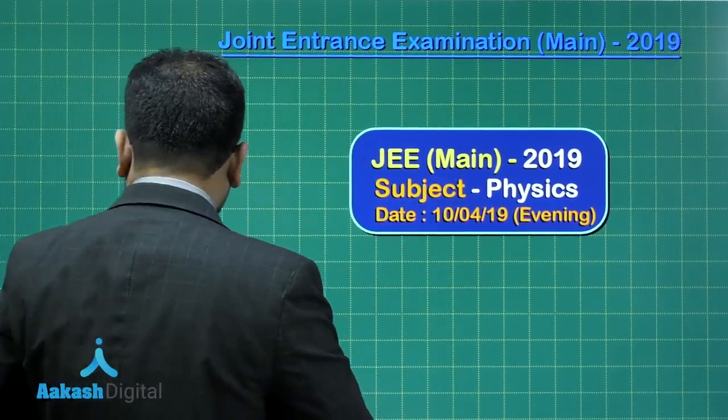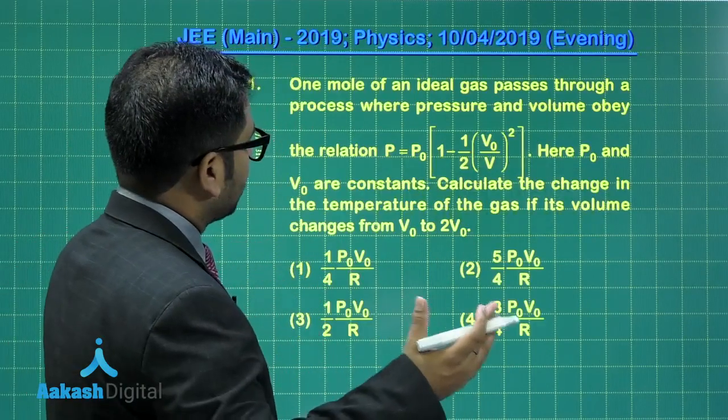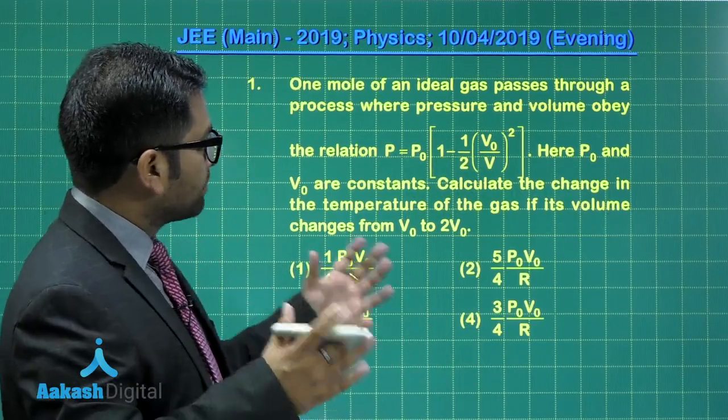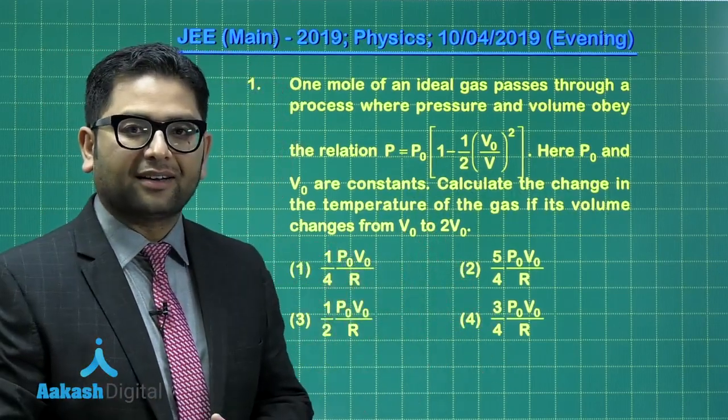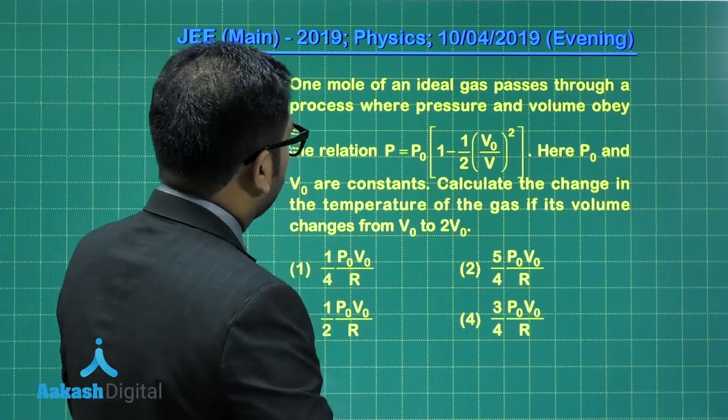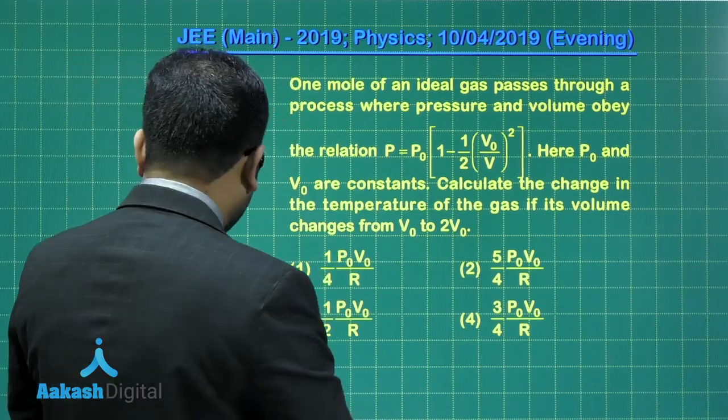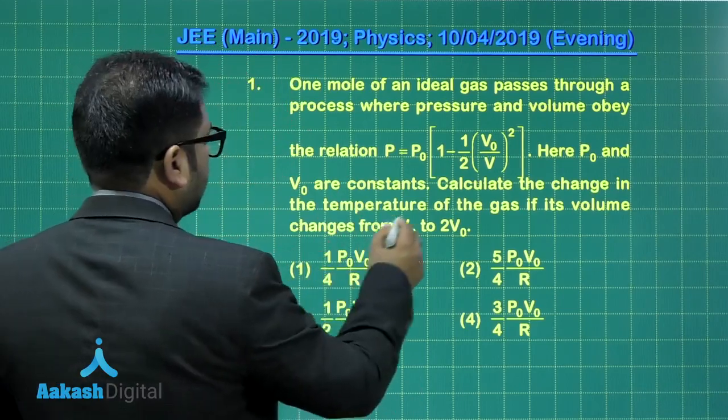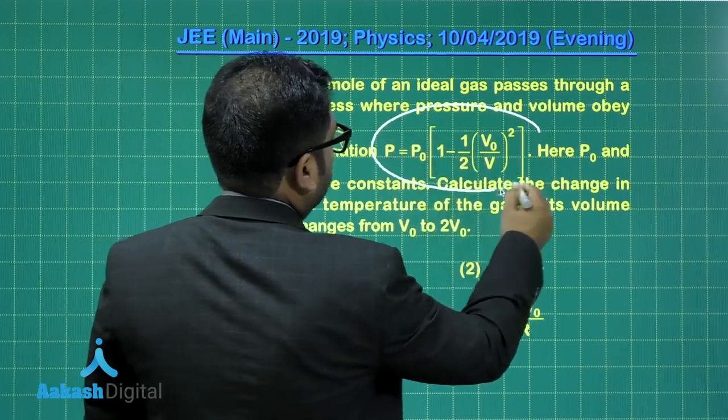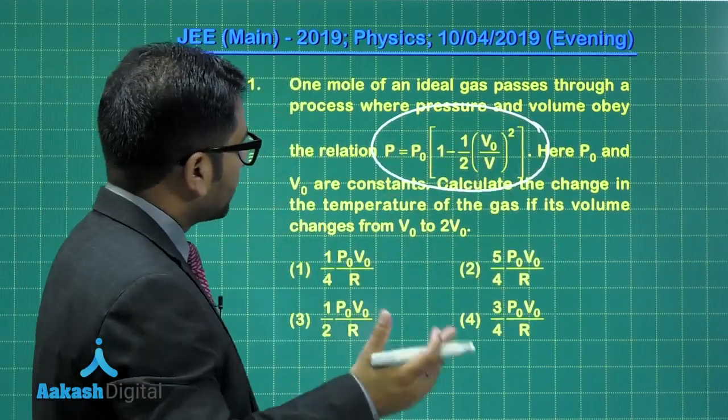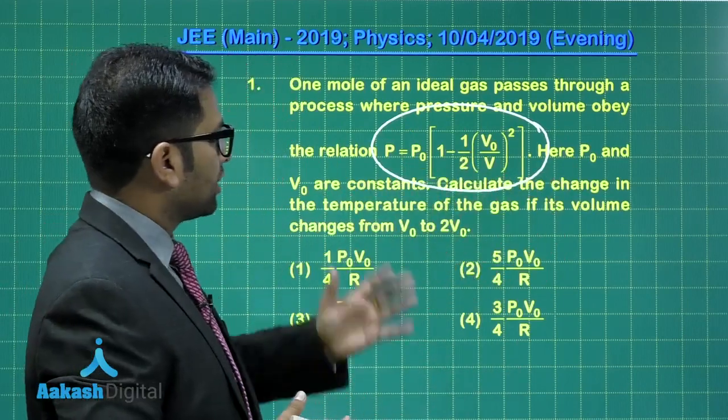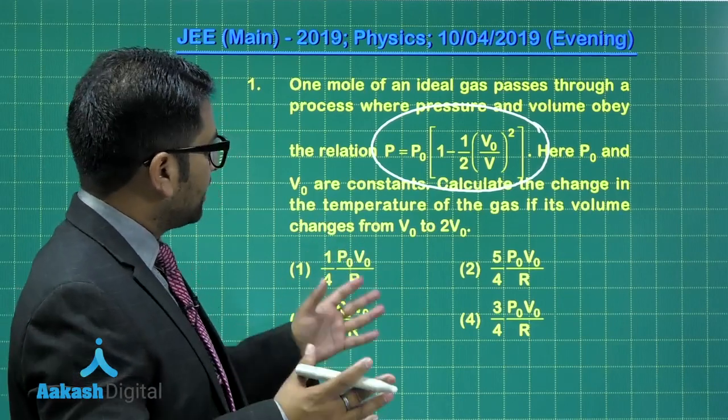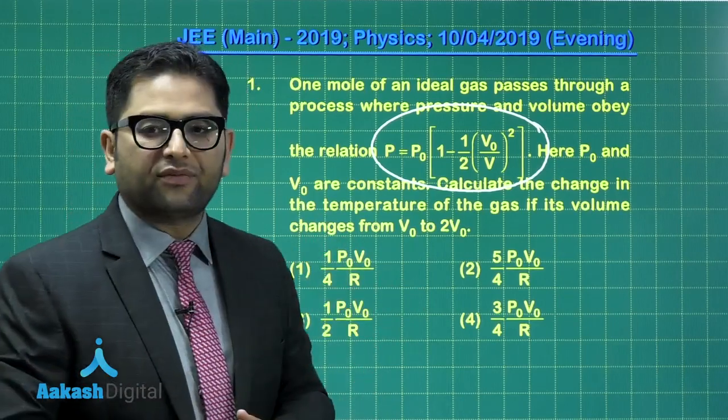Let's begin with the question solution. The first question has been brought from thermodynamics and more precisely the kinetic theory of gas part. It says that one mole of an ideal gas passes through a process where pressure and volume obey the relation P = P₀(1 + 3(V₀/V)^(1/2)). Here P₀ and V₀ are constants. Calculate the change in temperature of the gas if its volume changes from V₀ to 2V₀.